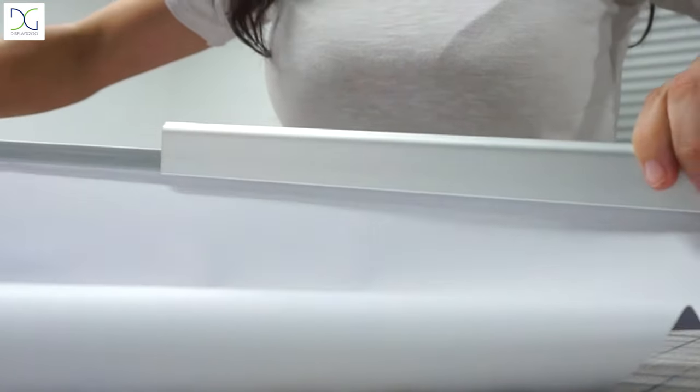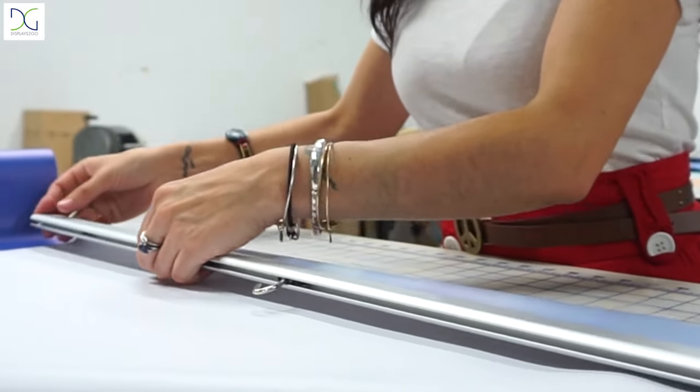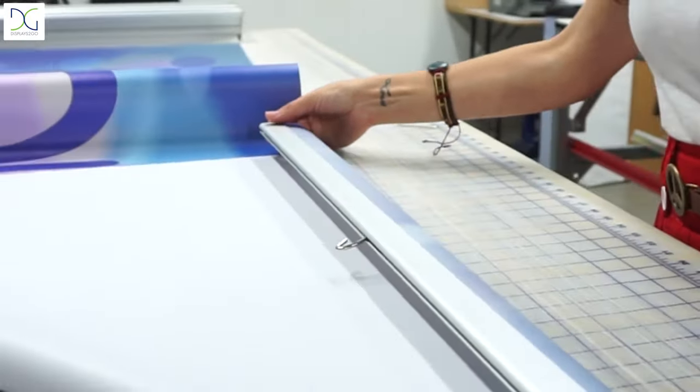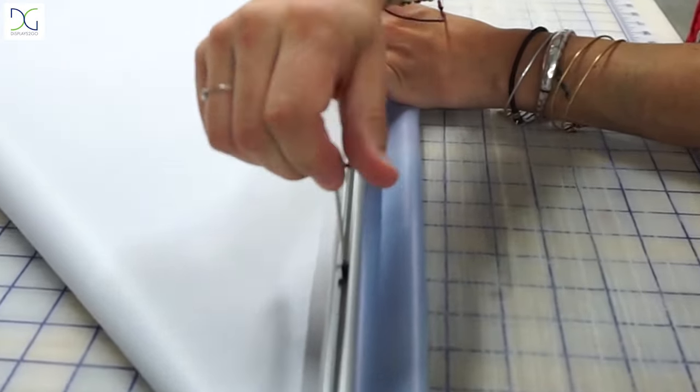From there, insert the V-shaped rail and the newly adhered banner into the side of the top rail, and push it across till all the sides line up. Use the Allen key to tighten the four screws within the top part of the rail.